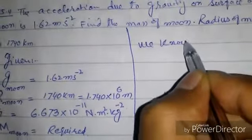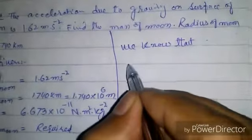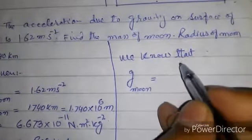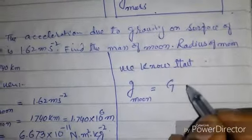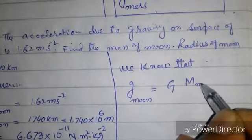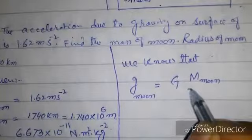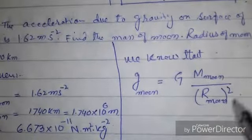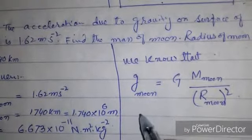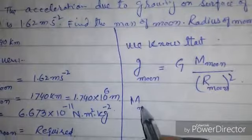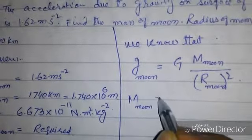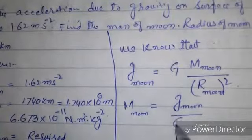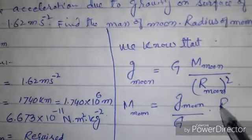We know that g at moon is equal to G into mass of moon over square of the radius of the moon. Now, mass of moon is equal to g at moon over capital G into radius of moon squared.